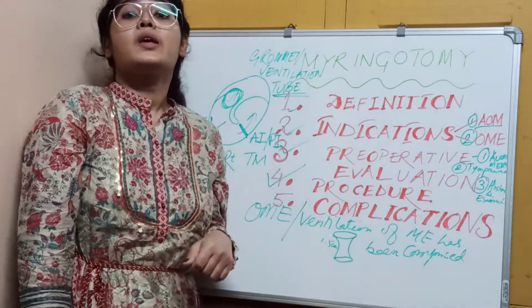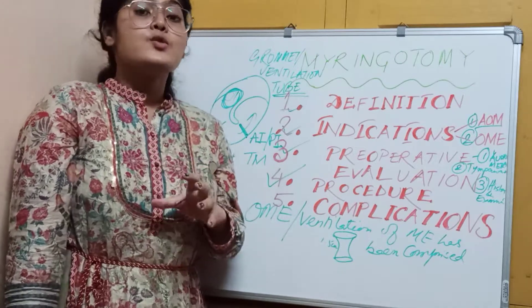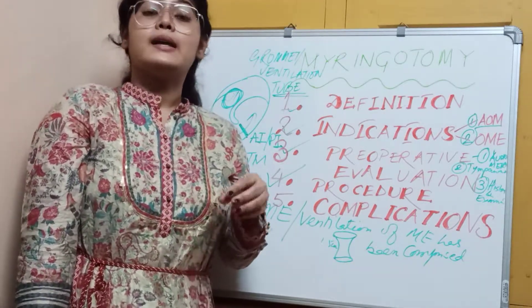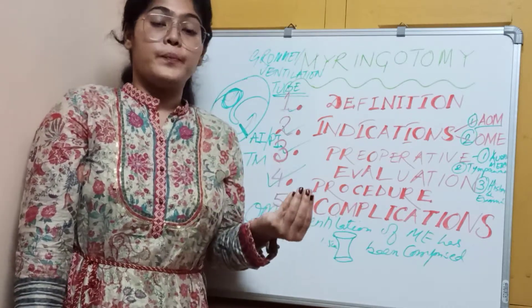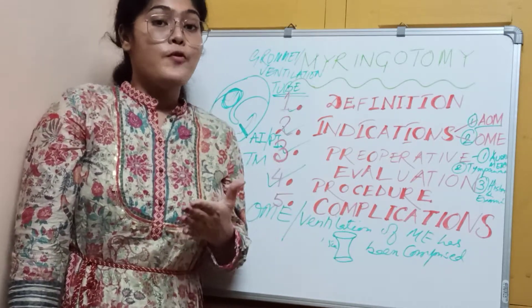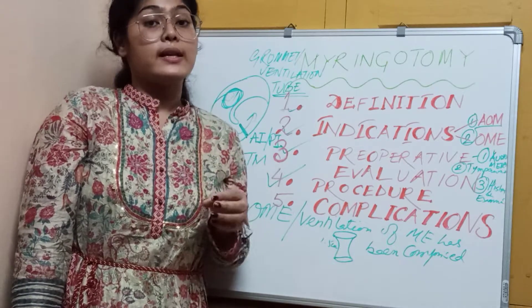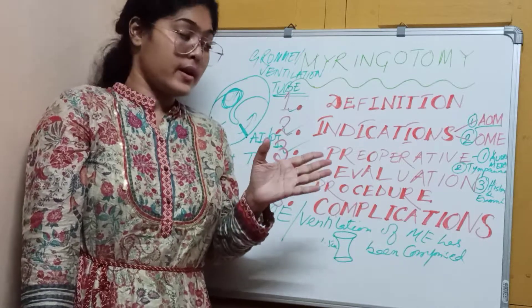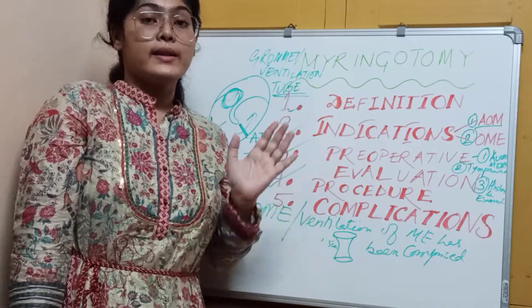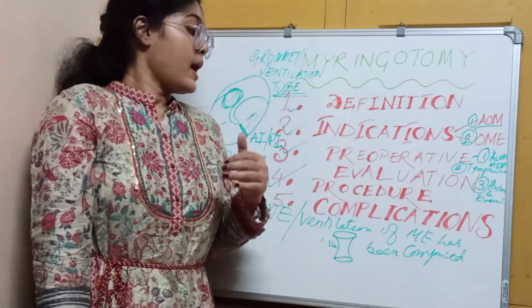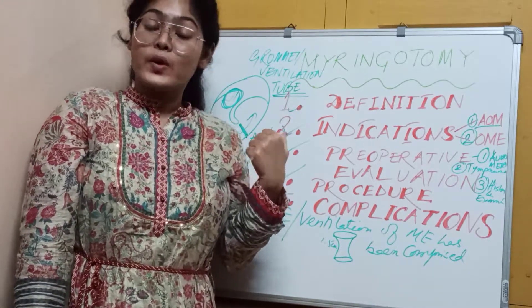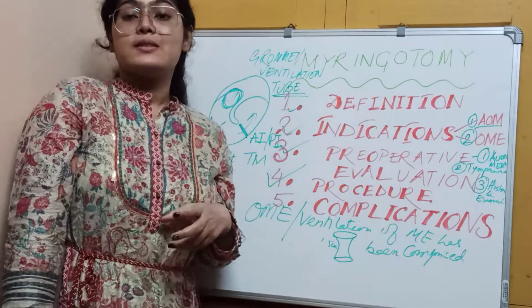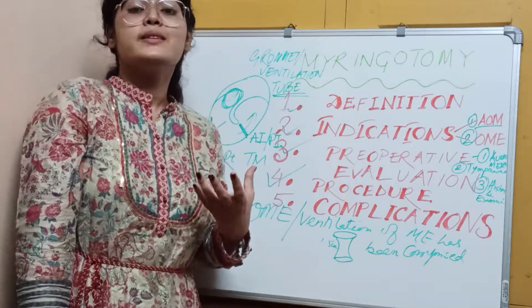The next point is the procedure. For any procedure, you should first know what kind of anesthesia to use. General anesthesia is used in children or in adults who do not consent to local anesthesia. For consenting adults, local anesthesia is used — specifically, we use Lido-K.